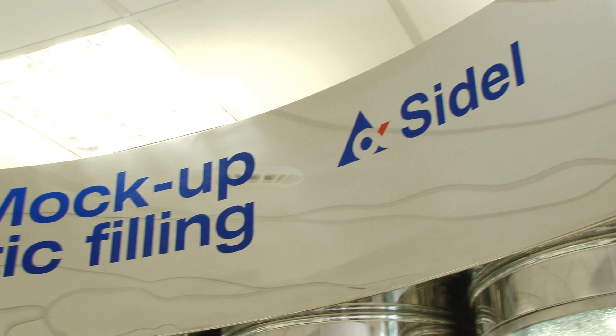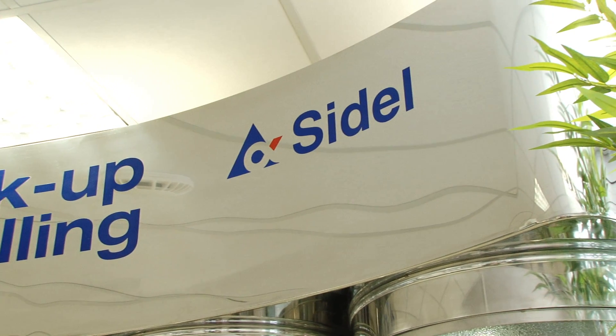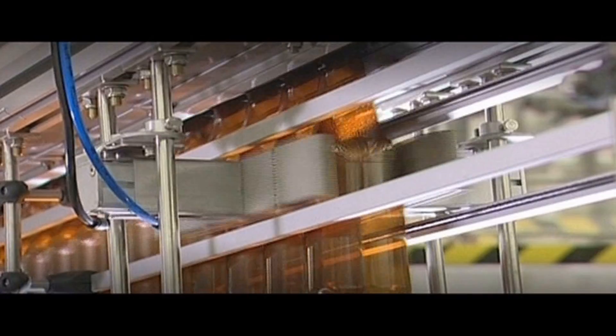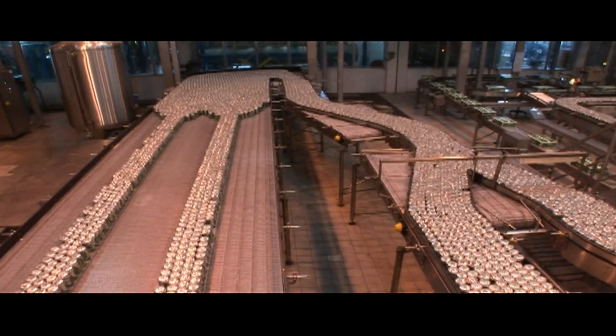The Seidel Group design, manufacture, assemble, supply and sell complete packaging lines for liquid foods packaged in three main categories: glass bottles, plastic and drink cans.